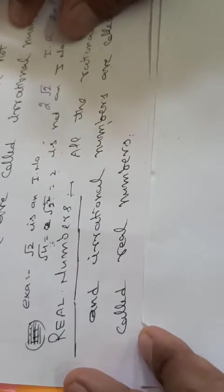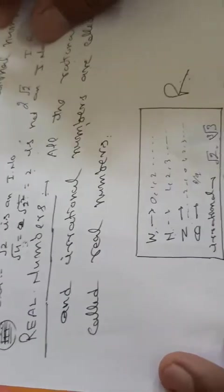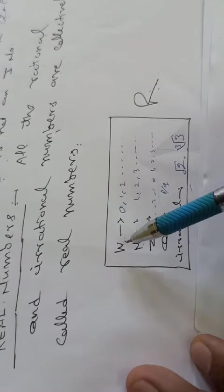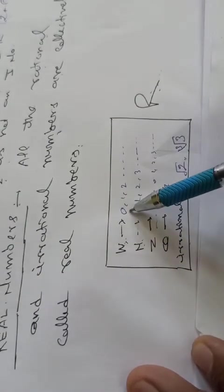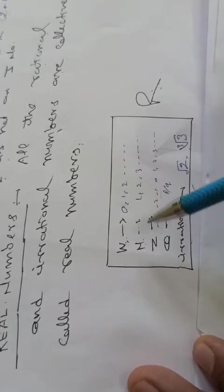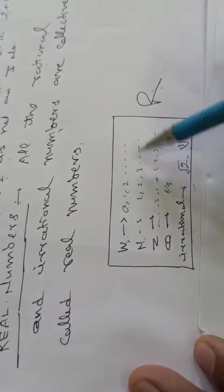To real numbers ko samajhne ke liye, maine ek box banaya hai. Is box mein humare paas jaise whole numbers - W for whole numbers, which are 0, 1, 2, 3, and so on. N for natural numbers - 1, 2, 3, and so on.